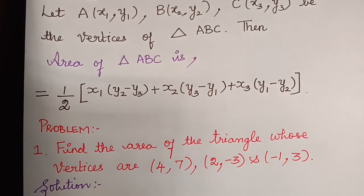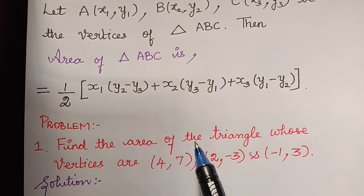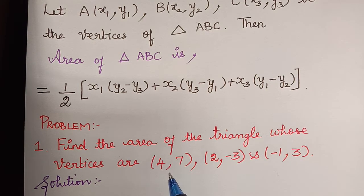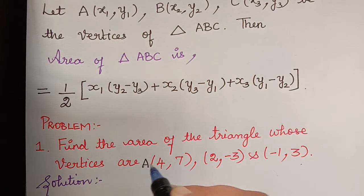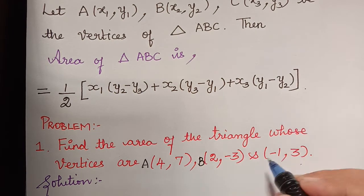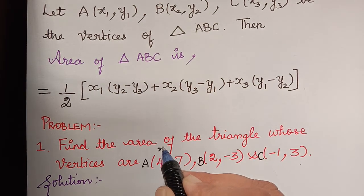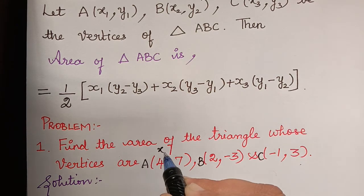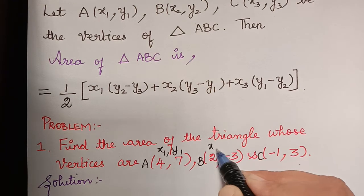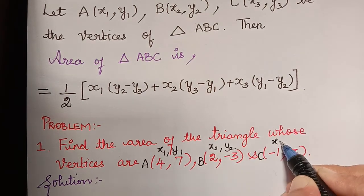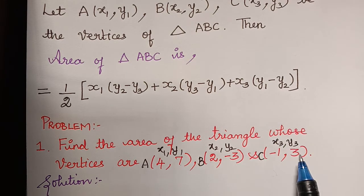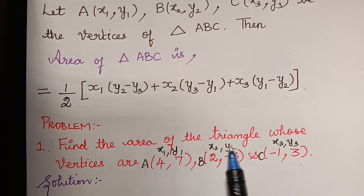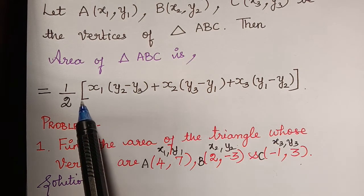The first problem is: find the area of the triangle whose vertices are (4, 7), (2, -3), and (-1, 3). We name these vertices A, B, and C respectively. So the coordinate of A is x1 comma y1, B is x2 comma y2, and C is x3 comma y3. These are the values of x1, y1, x2, y2, x3, y3. Now let us substitute these values into the formula to find the area.